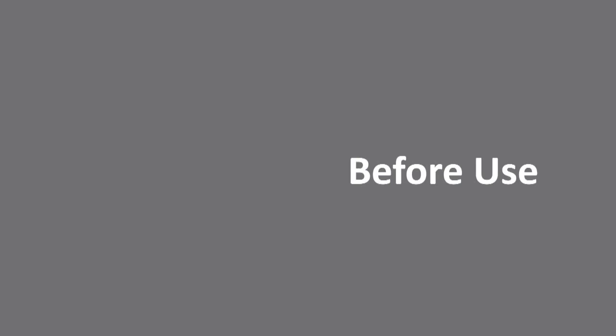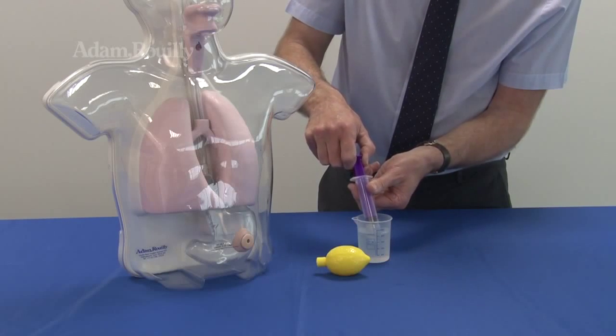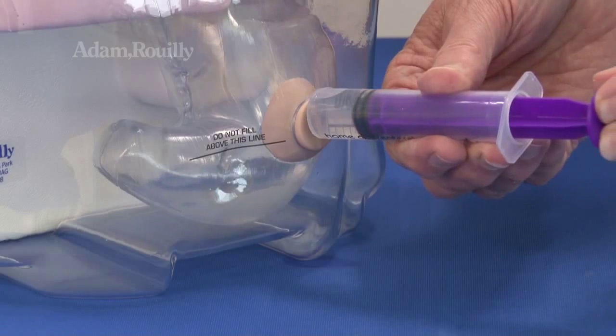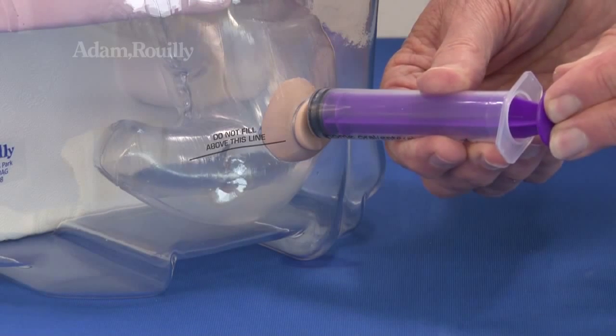Before use, mild acidic stomach aspirate may be inserted before training using the 20ml syringe and gastrostomy opening.